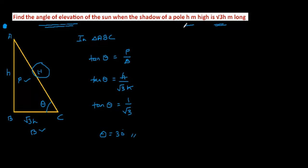Therefore, the angle of elevation of the sun when the shadow of a pole h meters high is root 3 h meters long is 30 degrees. Thank you.